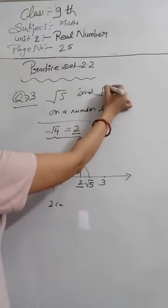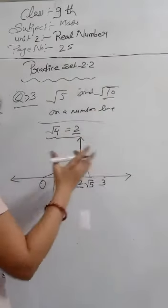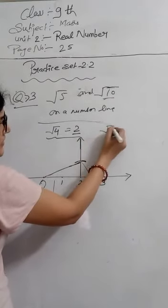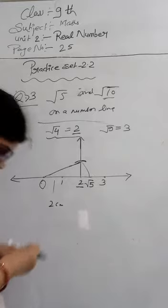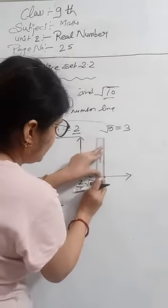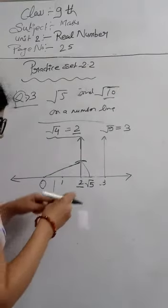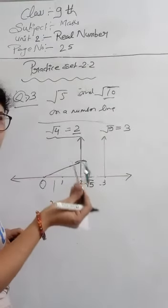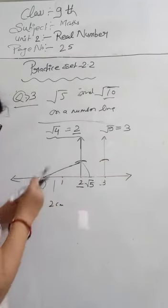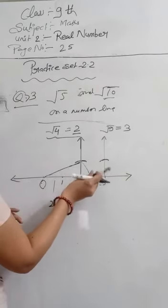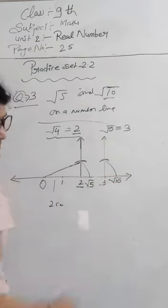Now we will take √10 on the number line. √10 is not a perfect square, so we take √9 whose perfect square root is 3. We will draw a perpendicular line, open our compass to 2 cm, draw an arc, then put the compass on 0 and draw another arc. This marks √10 on the number line.